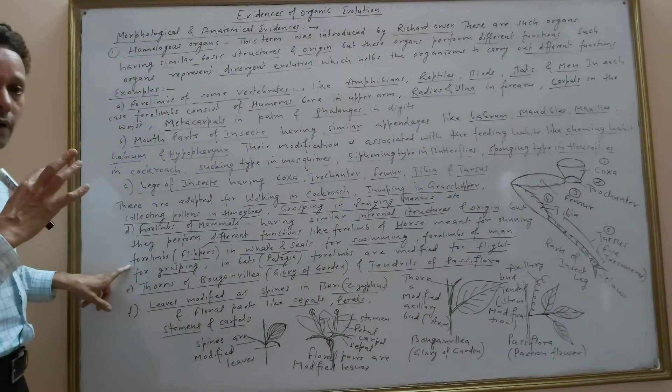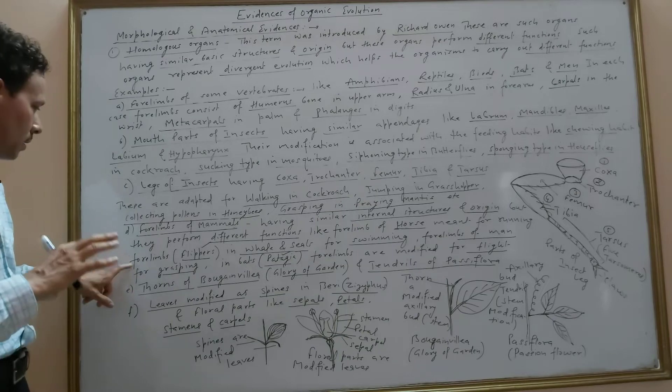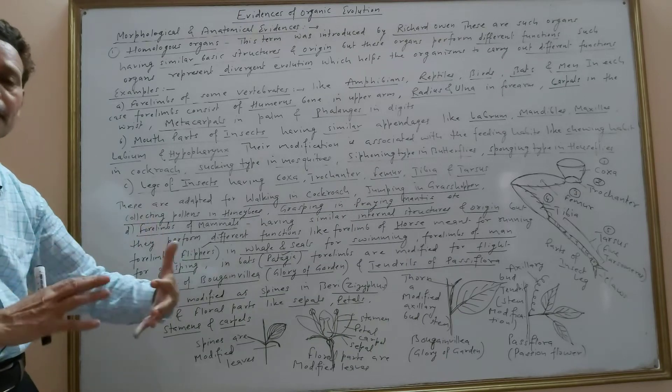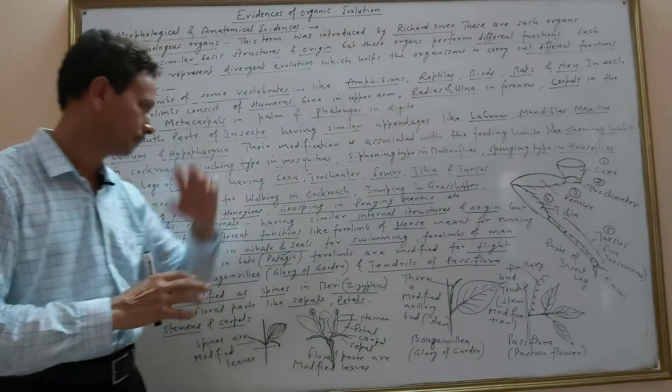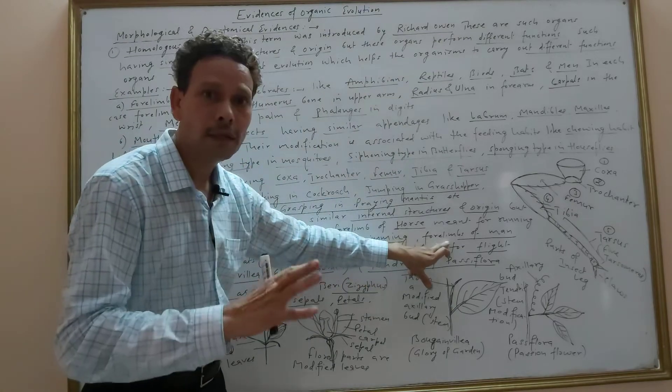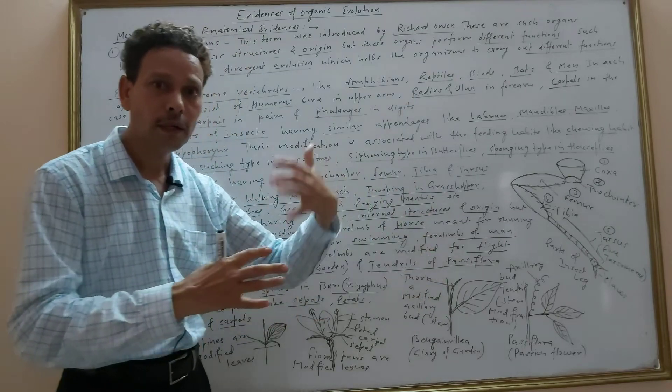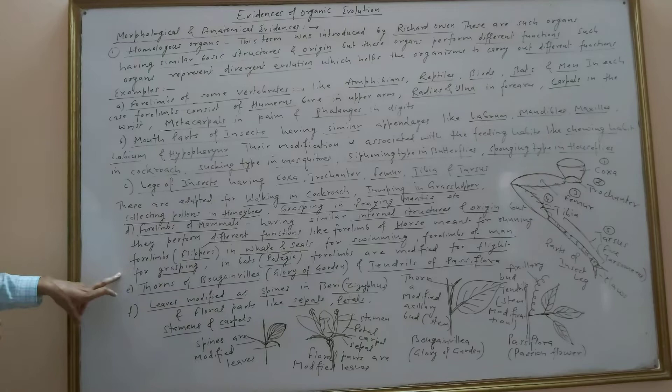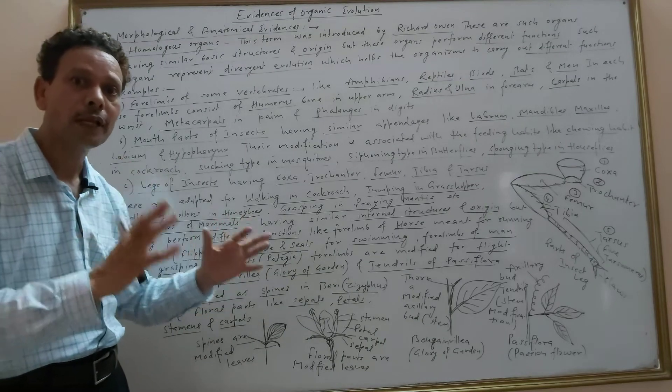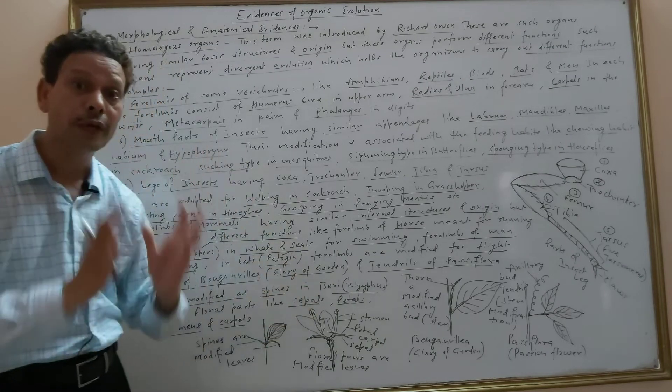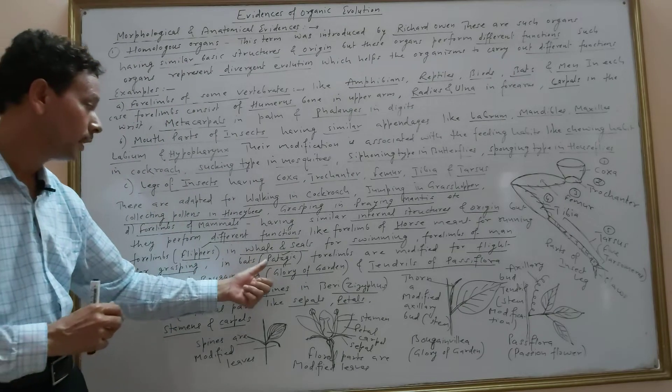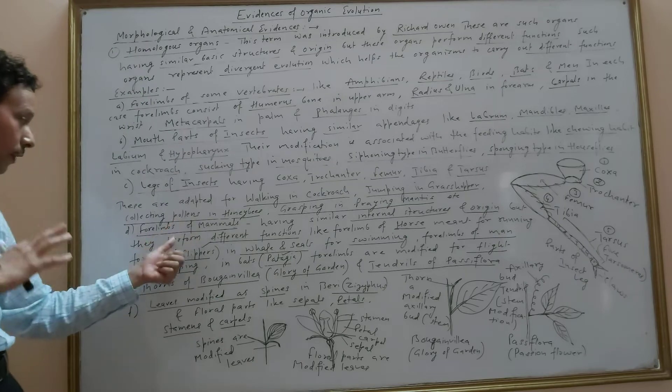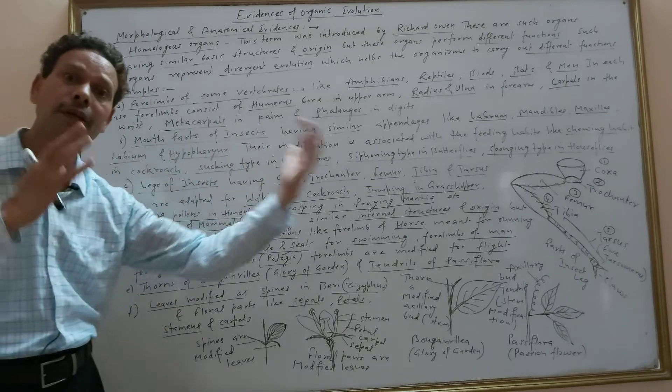In case of whales, the forelimbs are modified into flippers meant for swimming. In men, the forelimbs are modified for grasping purpose. In case of bats, very important for competitive exams: the modified forelimbs are patagium, and in case of whales and seals, the modified forelimbs are flippers.